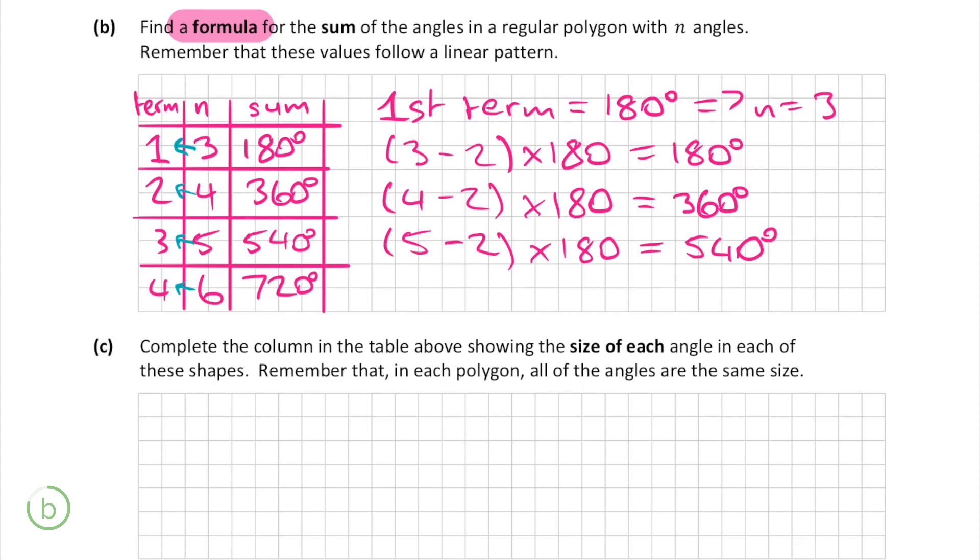However we need to write this in terms of n. To do this we should move the 180 to the front of the brackets and rewrite this expression as 180 by n minus 2 where n is the number of angles in the polygon. For working out part b we get another 5 marks.